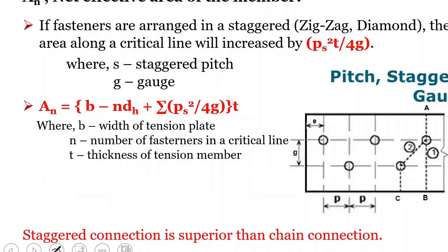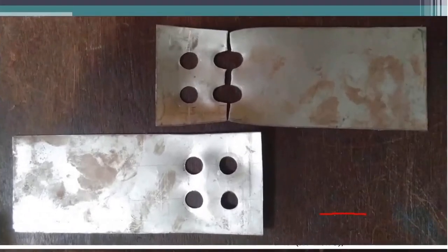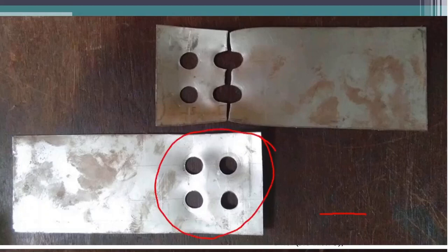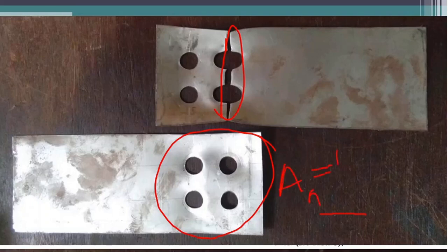Now let's take a different section. If the plate fails in a chain pattern — as we have discussed — let's see the plate failure of this pattern. In the first picture, the bolts are arranged in a chain pattern and the rupture failure happened along that line. Looking at the equation: net area is width minus 2 times the hole diameter, into thickness. That is the cross-section area of this section — let's name it section 1-2-3-4.